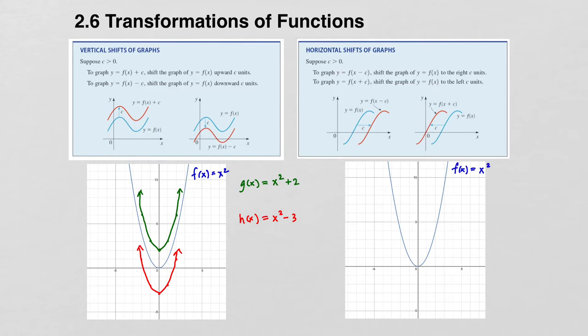Horizontal shifts of graphs work pretty much the same way. If you have the graph of some known function f(x), the function f(x - c) will actually shift it to the right c units, and f(x + c) will shift it to the left c units.